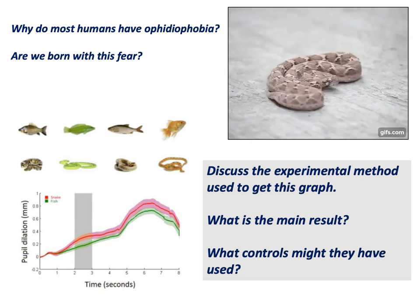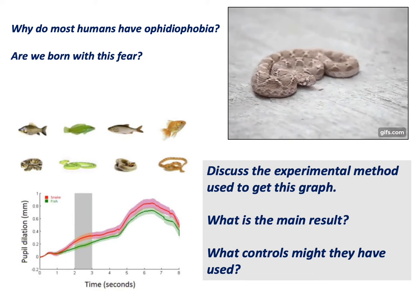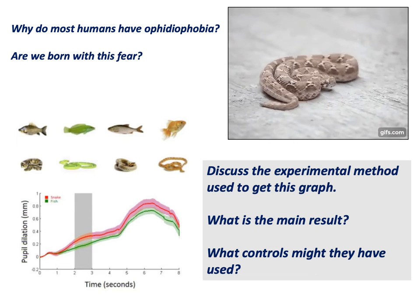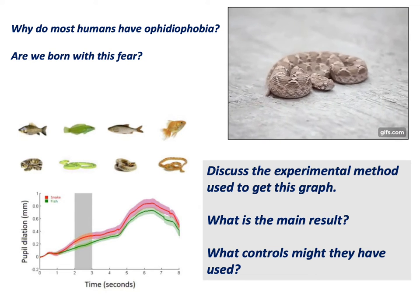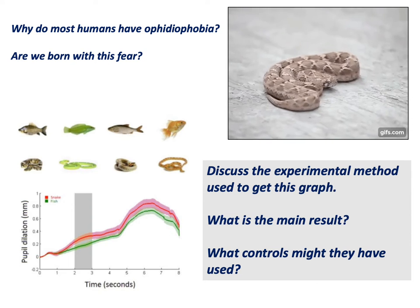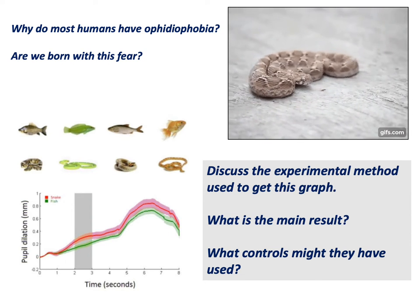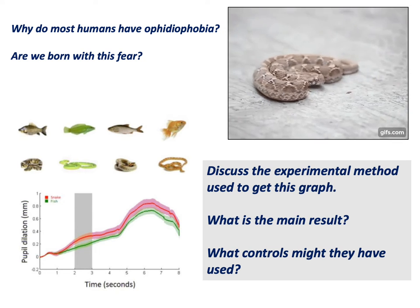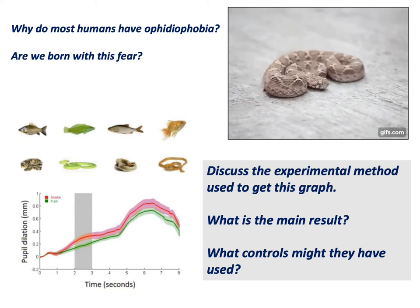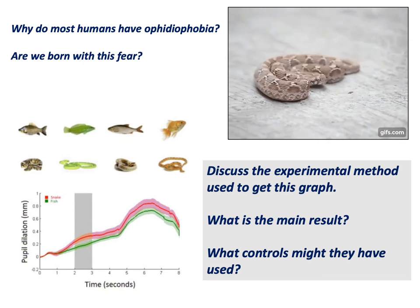Possibly controlling the order — the number of snake images in a row versus fish images in a row. Now, what's interesting about this graph is that you probably automatically assumed the subjects were human beings, but they weren't. This was actually a study done on rhesus macaques — rhesus macaques are monkeys, and therefore the same type of creature that we are.